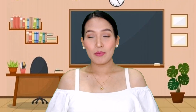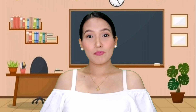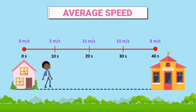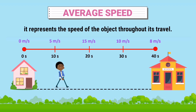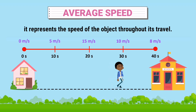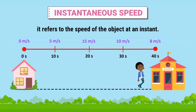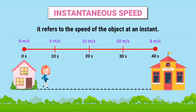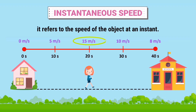Notice that in the problem it requires us to solve for the average speed, and not just speed. Why is this so? It is considered average speed because it represents the speed of the participant throughout his travel. During his travel, there were instants that his speed would vary. His speed at an instant is called instantaneous speed. For example, in this illustration, Mary's instantaneous speed at 20 seconds is 15 meters per second. The instantaneous speed may be equal, greater than, or less than the average speed.